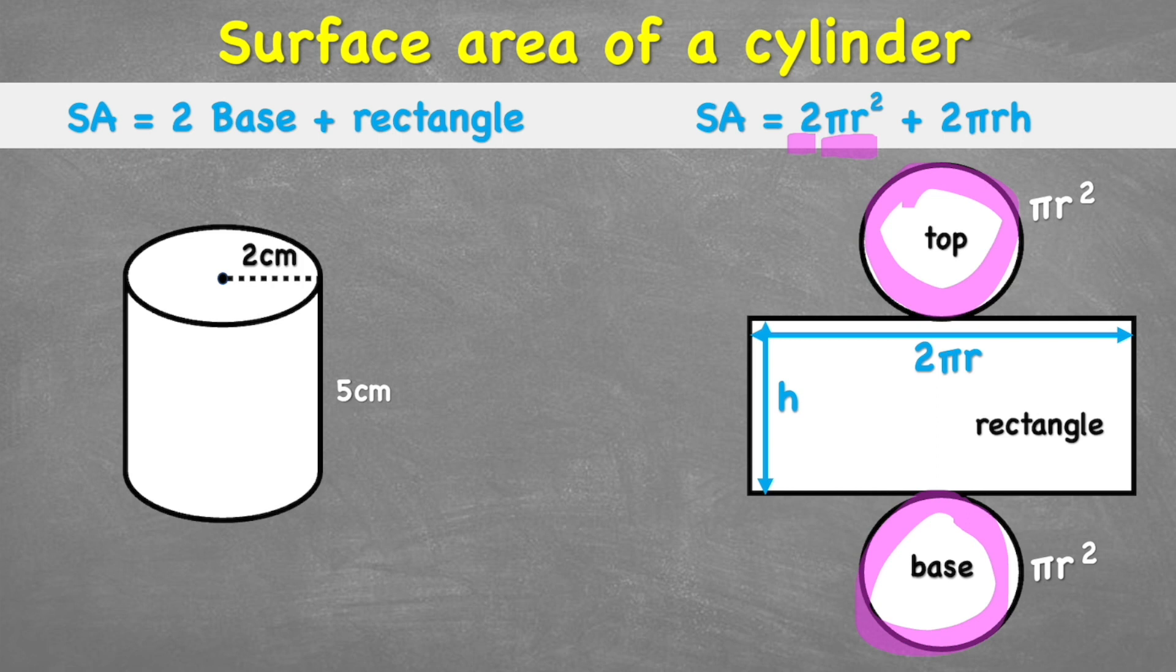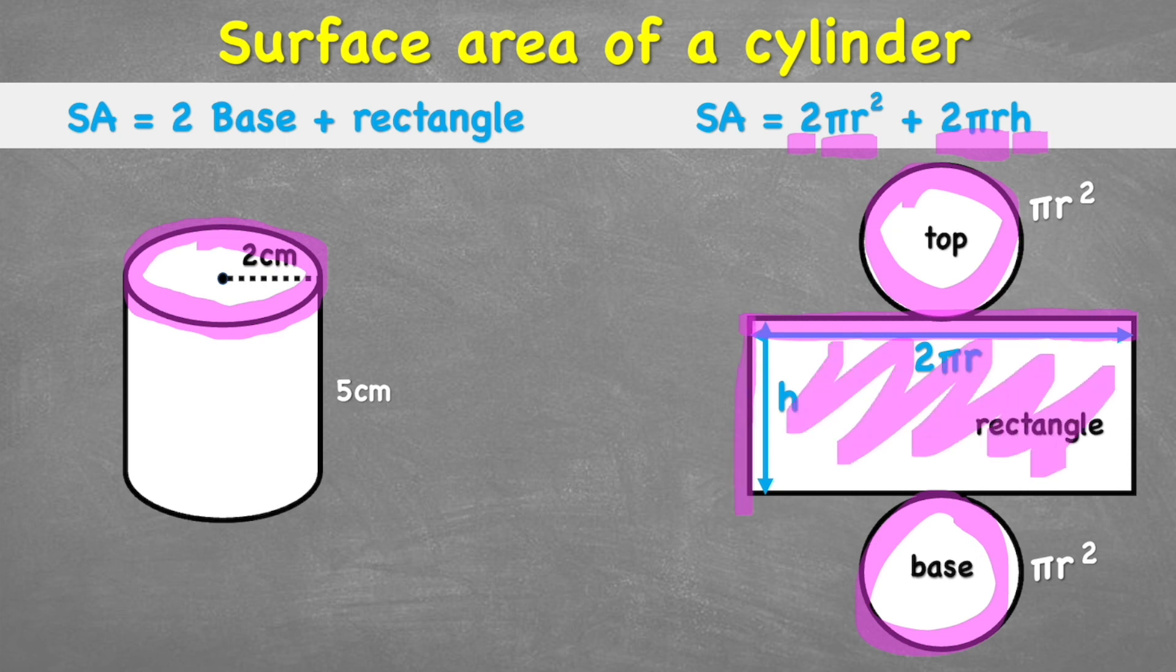And then we're adding it to 2πr times the height. Okay, well let's break that down then. 2πr, that's the formula to work out the circumference of a circle. So what we're going to get with that is this black line going around this circle. If you think about it, that black line is actually the same as one of the lengths of the rectangle. And then when we multiply that by h, the height, we will get the area of the rectangle.